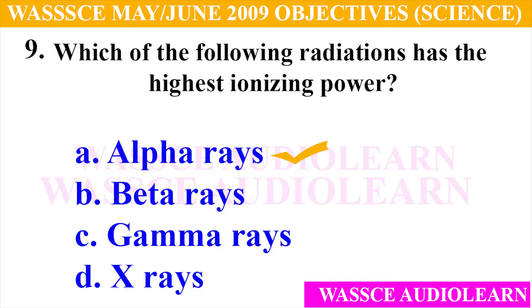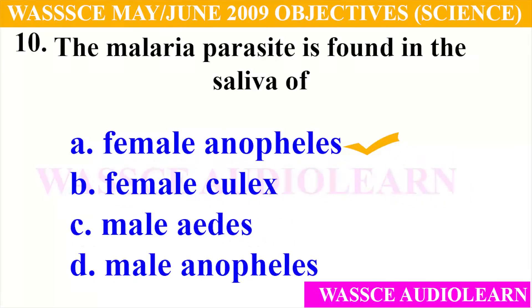Question 9: Which of the following radiations has the highest ionizing power? A. Alpha rays, B. Beta rays, C. Gamma rays, D. X-rays. And the answer for number 9 is A, alpha rays. Alpha rays have the highest ionizing power.